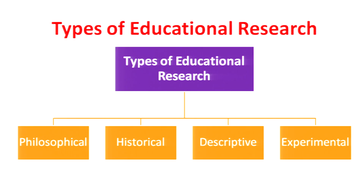As a student of education, you are supposed to use certain methods in your research and dissertation work. Mostly four types of methods are used: philosophical method or philosophical research, historical method or historical research, descriptive method or descriptive research, and the fourth is experimental method or experimental research.